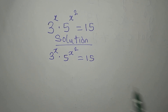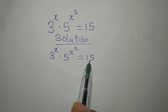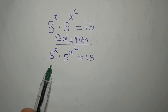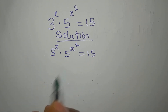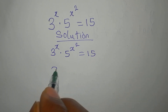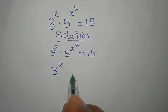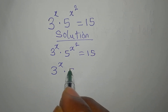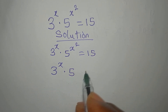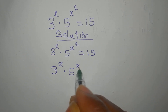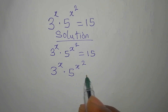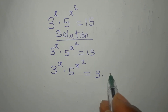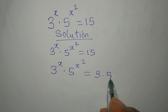This is simple. We have 15, and 15 can be written as 3 times 5. So we're going to have 3 to the power of x multiplied by 5 to the power of x squared, and that is equal to 3 times 5.